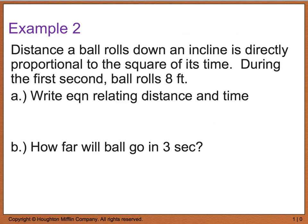So for example 2, it says a distance a ball rolls down an incline is directly proportional to the square of its time. During the first second, a ball rolls 8 feet. We want to write an equation relating the distance and time. So based on what was given, we know that distance is equal to some constant k times the square of our time, or t squared. So now, in order to solve for k, we are going to have to plug in what we know. We know that during the first second, or when t is equal to 1, and that's squared, we're multiplying that by k, our ball rolls 8 feet. So based on this, I know that k is going to equal 8 divided by 1, which is equal to 8.